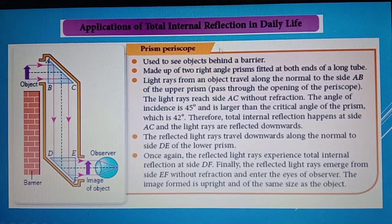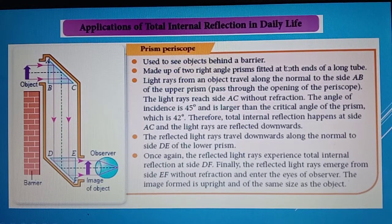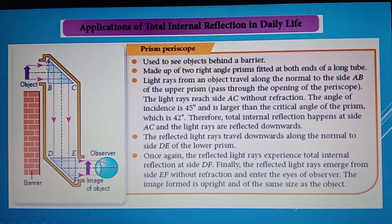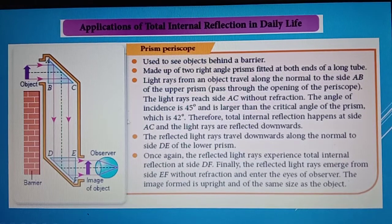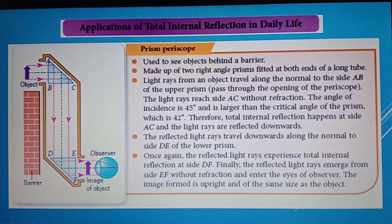A prism periscope is used to observe an object behind an obstacle or barrier. It is made up of two right-angle 45-degree prisms fitted at both ends of a long tube. Light rays from the object travel along the normal to side AB of the upper prism and reach side AC without refraction — angle I equals zero, so R also equals zero. When the light reaches the reflecting surface, you draw a normal line and angle I equals 45 degrees, which is greater than the critical angle of a glass prism, normally about 42 degrees. So total internal reflection occurs, and the reflected ray proceeds to the next prism.